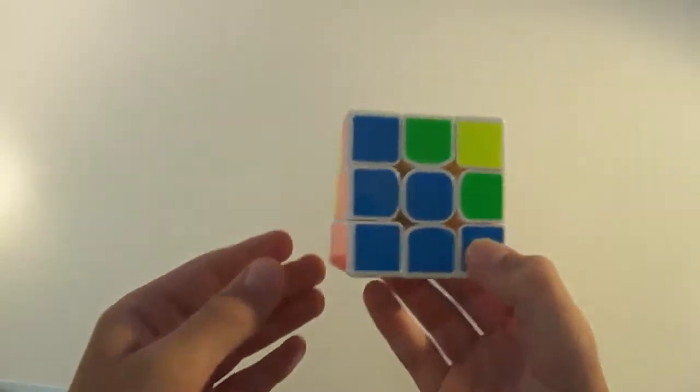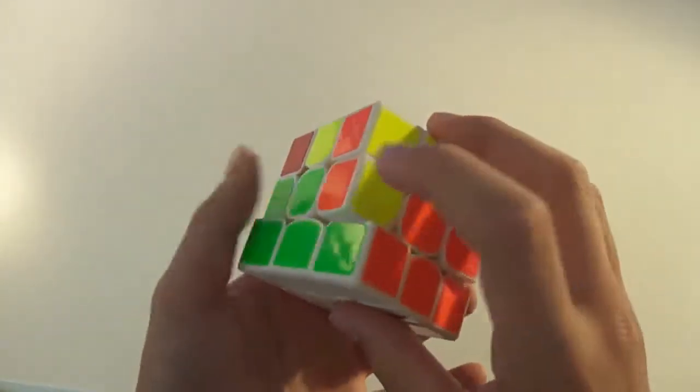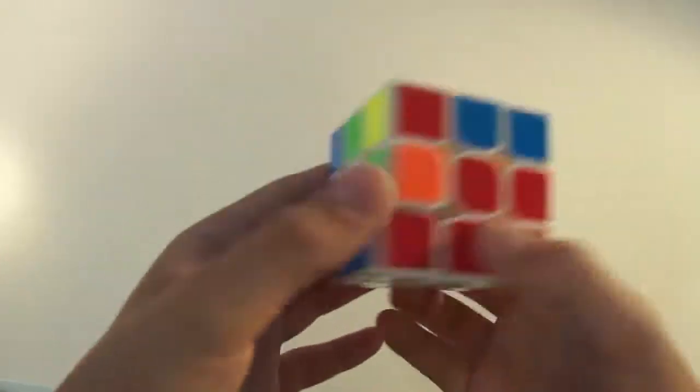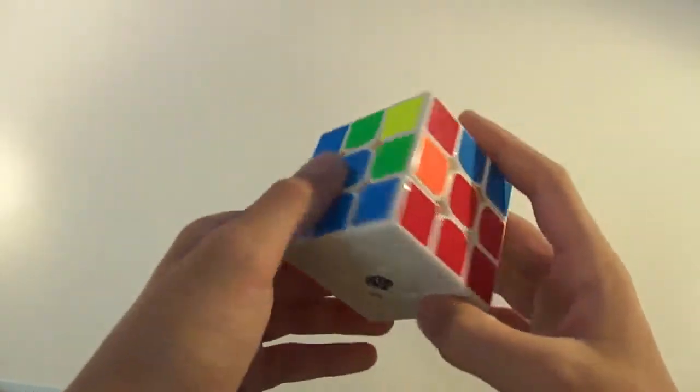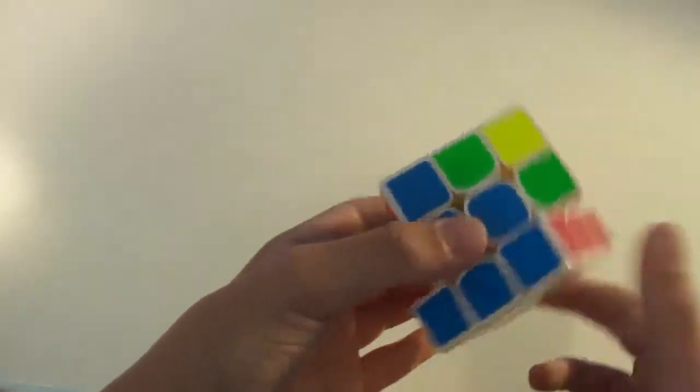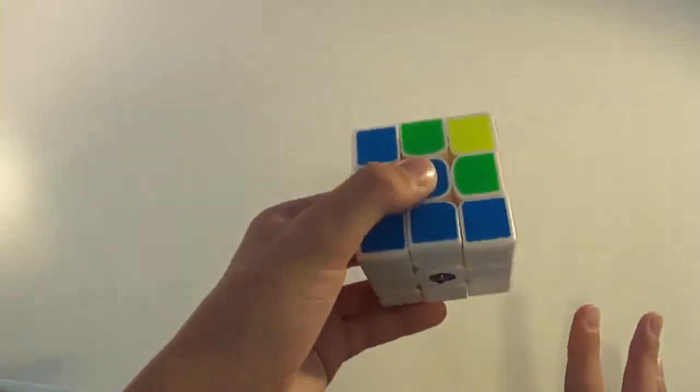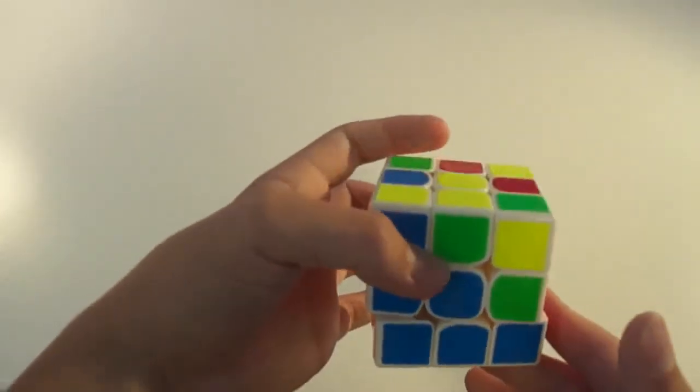Now, you're going to be looking for the four edges that go in these four spots. There will be a lot of different cases you can have for this, but it's not too overwhelming. Once we've finished the first layer, now the second layer. So we're not worrying about white at all now. All the white pieces are solved correctly.